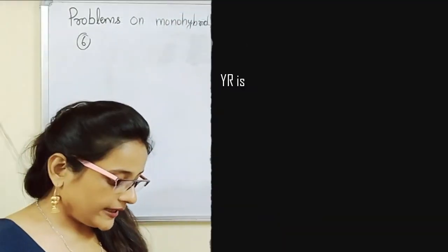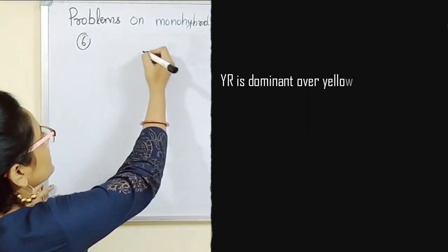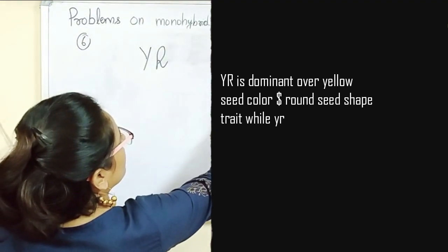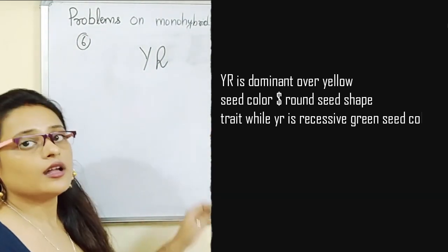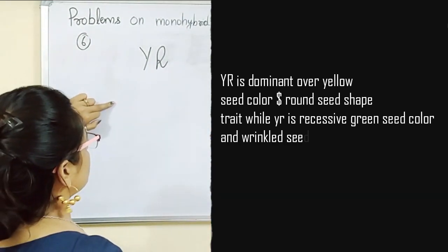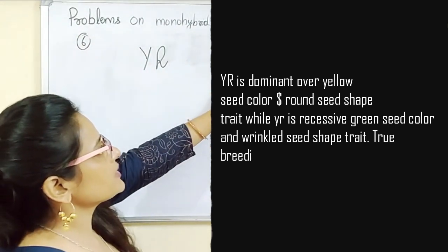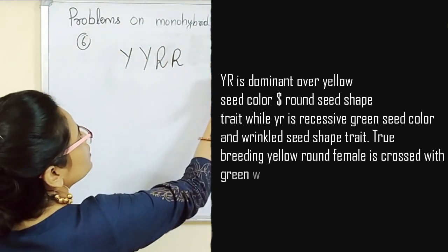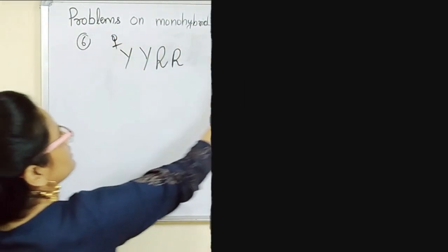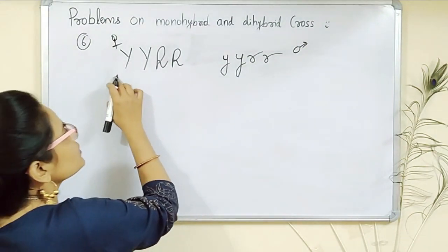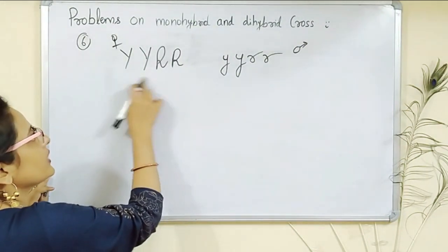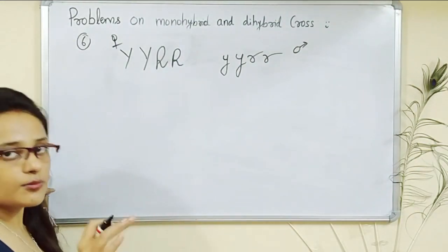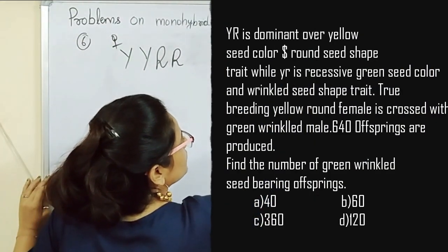Let's start. Capital Y and capital R are dominant — yellow seed color and round seed shape. Small y and small r are recessive — green seed color and wrinkled seed shape. A true breeding yellow round female is crossed with a true breeding green wrinkled male. True breeding means the genotype is homozygous — yellow is capital Y capital Y, round is capital R capital R, green is small y small y, and wrinkled is small r small r. The question states that 3640 offspring are produced from this cross.